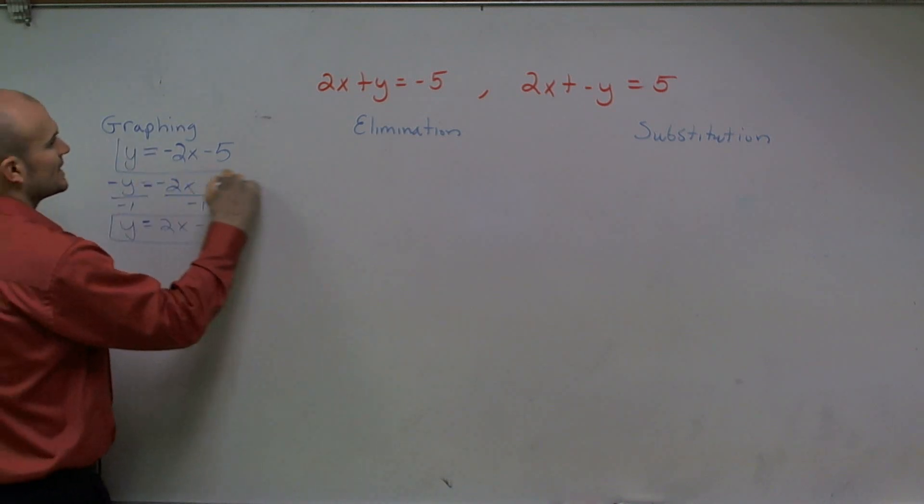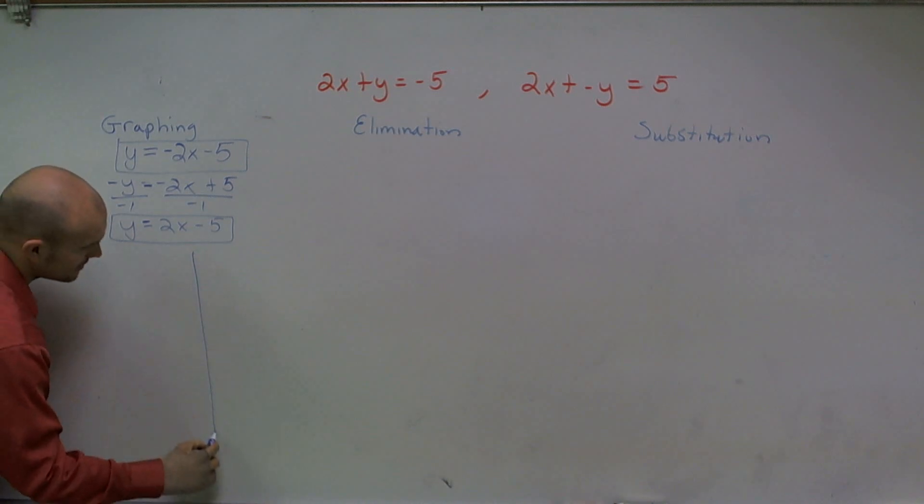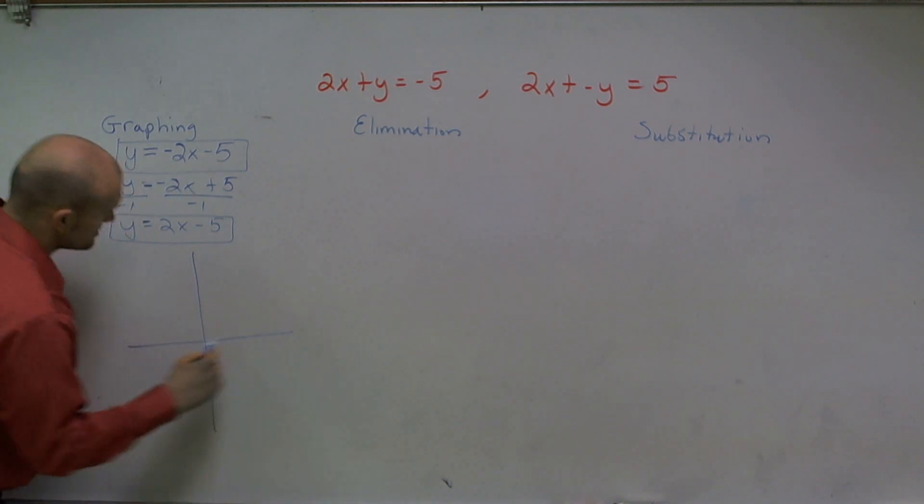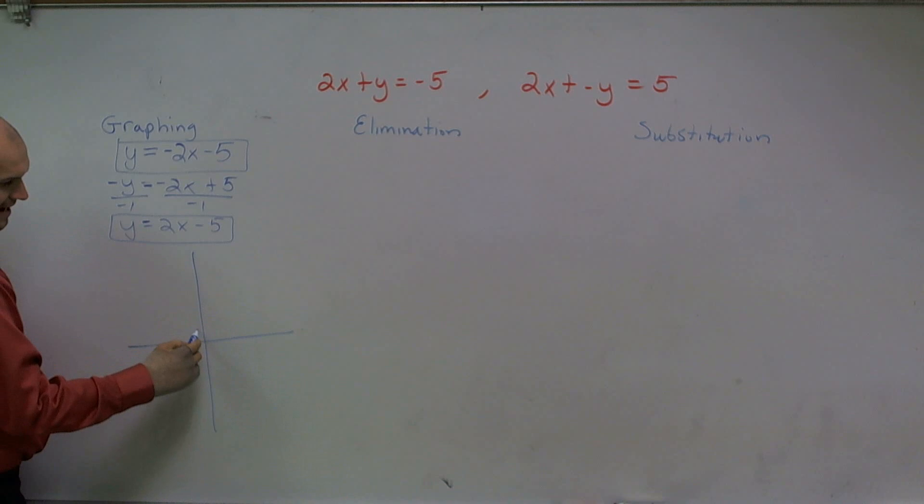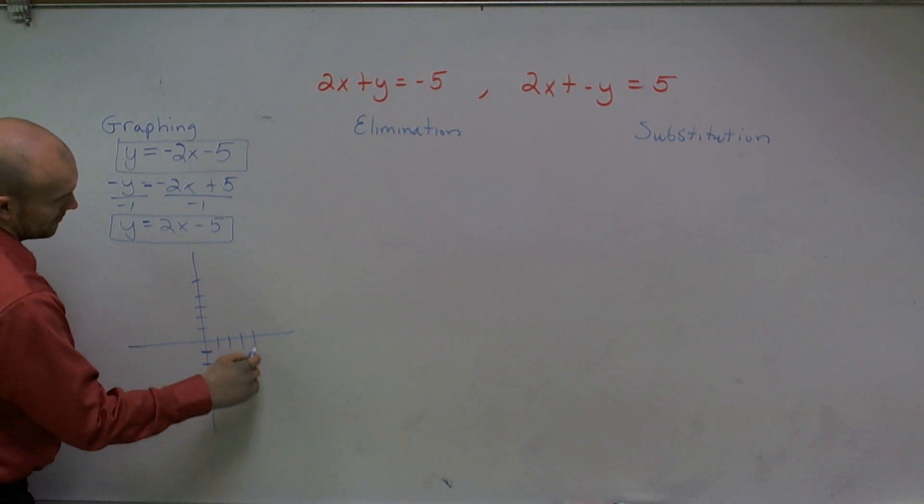So there is my two equations. So now I can simply just give myself an x and y axis. And I'll graph these. Here my y intercepts at 5. 1, 2, 3, 4, 5. Now here's one at negative 5. 1, 2, 3, 4, 5. 1, 2, 3, 4, 5.